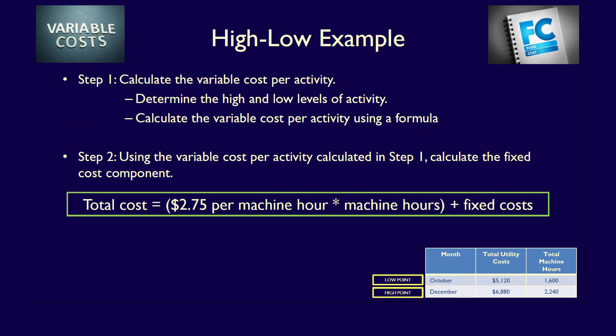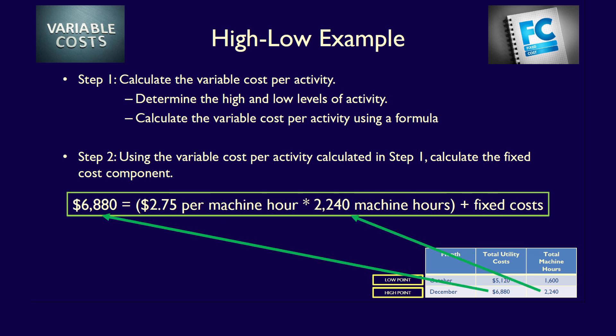Step 2: using the variable cost per activity, calculate the fixed cost component. We'll use our partially completed formula, substituting the total mixed cost and level of activity for either the high or low point and solving for the unknown — fixed costs. We can choose either; let's use the high point. The high activity is 2,240 machine hours in December with a related high cost of $6,880.